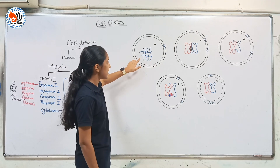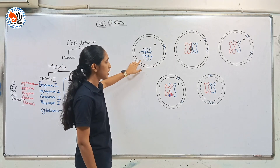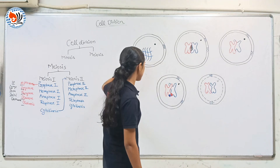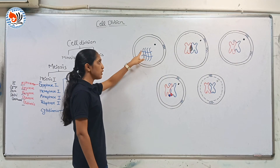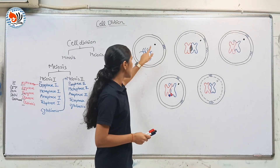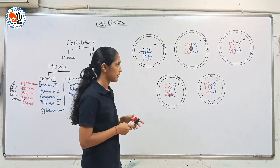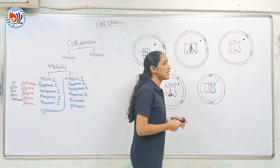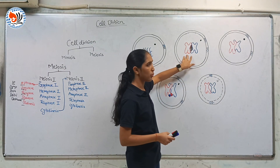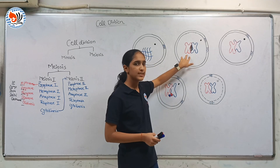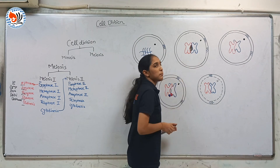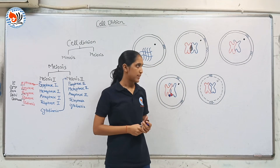In leptotene, there will be condensation of chromatin fibers and centriole duplication will start. In the chromosome there will be presence of bead-like structures. The nucleolus and nuclear envelope start disappearing. Then in zygotene, there will be pairing of homologous chromosomes, which is also called synapsis. Between them, there is the synaptonemal complex formed.